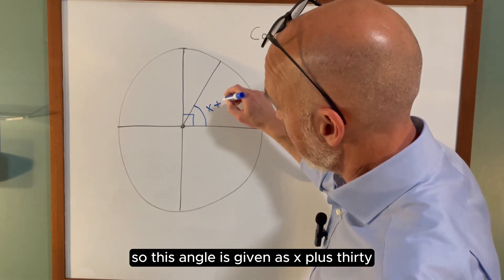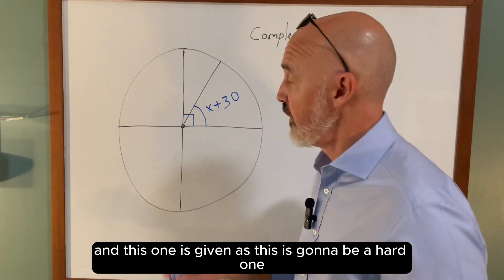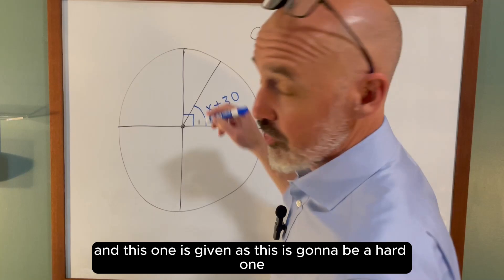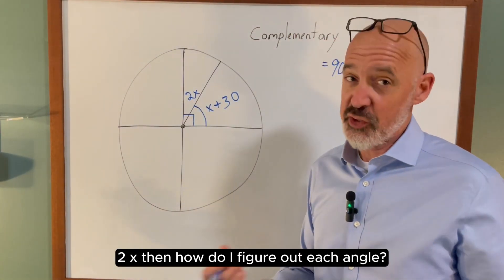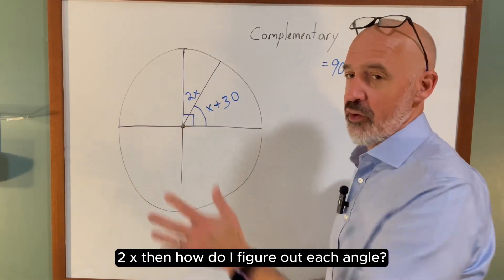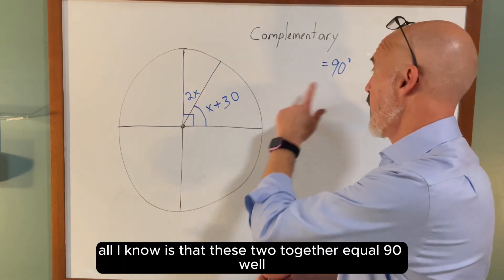So this angle is given as x plus 30, and this one is given as—this is going to be a hard one—2x. Then how do I figure out each angle? Really all I know is that these two together equal 90.